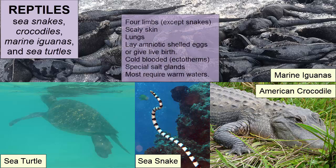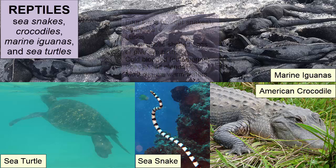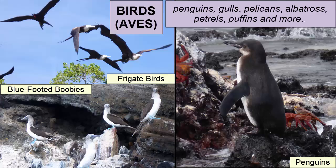Class Reptilia consists of four-limbed chordates with scaly skin. Gas exchange happens via lungs; they lay amniotic shelled eggs or give live birth. They are cold-blooded; special salt glands concentrate and excrete excess salt from body fluids. Except for one turtle species, they require warm waters. They include sea snakes, crocodiles, and sea turtles.